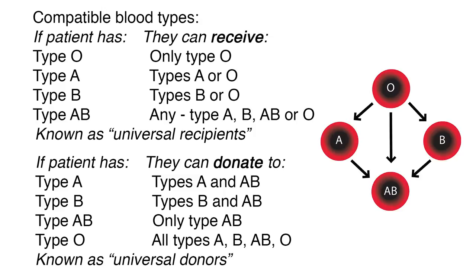If a patient has type A blood, they can donate to types A and AB. If the patient has type B, they can donate to type B and AB. If the patient has type AB blood, they can only donate to type AB. And if the patient has type O, they can donate to all types — A, B, AB, or O — and they are known as the universal donor.